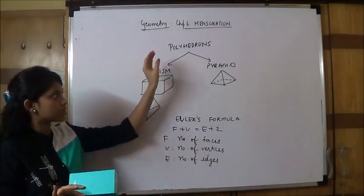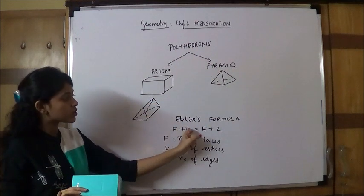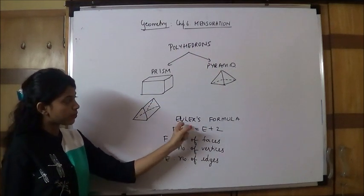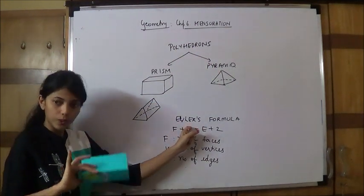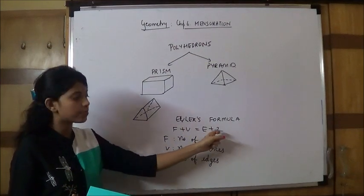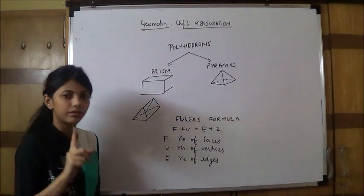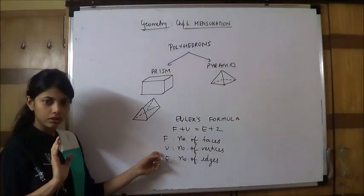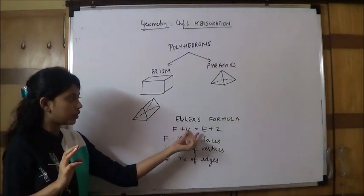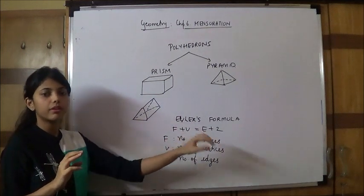Any type of polyhedron, be it prism or a pyramid. F plus V, that is number of faces plus number of vertices, is always equal to number of edges plus 2. To get a one mark sum regarding this formula, you will be given F, V or E, either of 2, and you have to find the remaining 1.